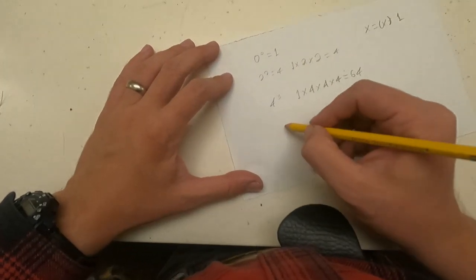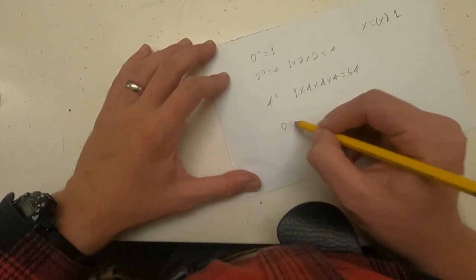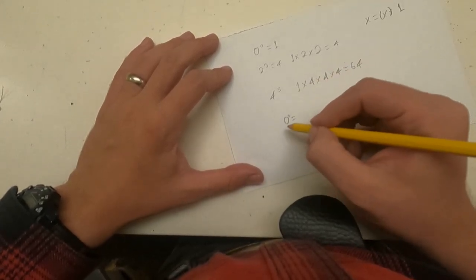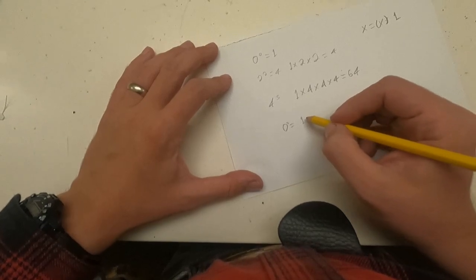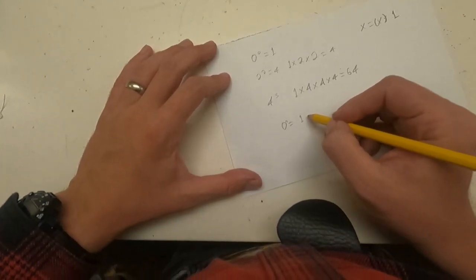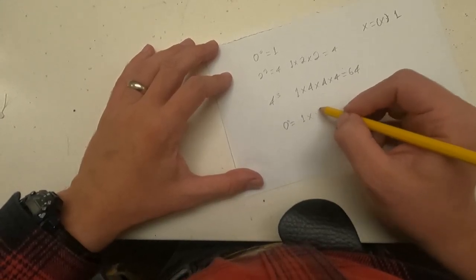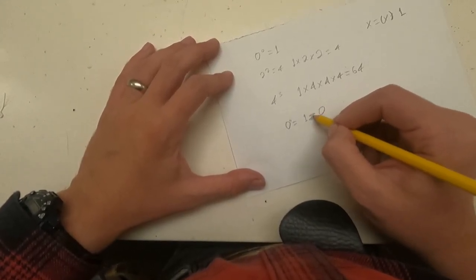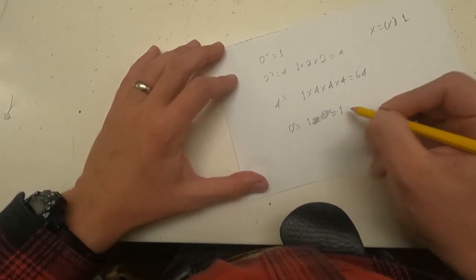Anyways, to take this back to 0, what you have here, 0 to the power of 0, you have 1, and it's not multiplied by 0, so it just equals 1.